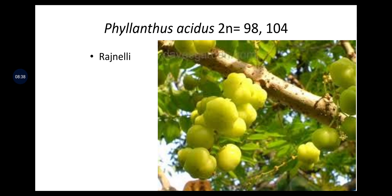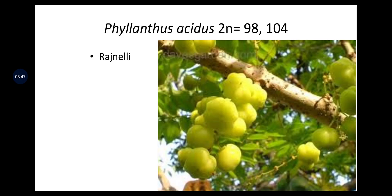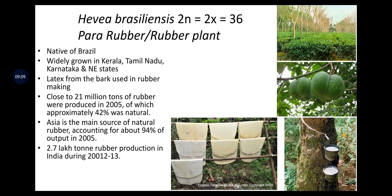Phyllanthus acidus has chromosome number 2n = 98–104, also called raginelli, and is cultivated mainly in urban areas, while Phyllanthus officinalis is found in forests. Emblica officinalis has 2n = 28 in diploid form. Hevea braziliensis (2n = 2x = 36) is the para-rubber or rubber plant, native to Brazil. Widely grown in Kerala, Tamil Nadu, Karnataka and northeastern states. Latex from the bark is used in rubber making. Close to 21 million tons of rubber were produced globally, approximately 42% of which is natural. Asia accounts for about 94% of output; India produced 2.7 lakh tons in 2012–2013.